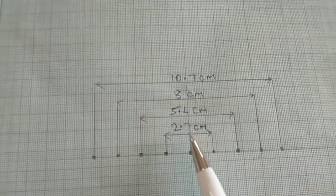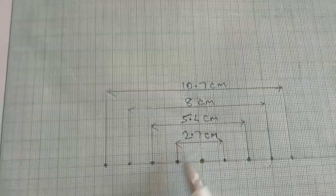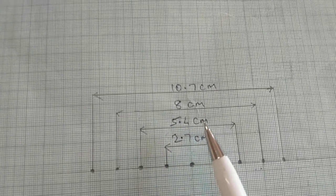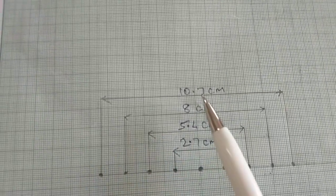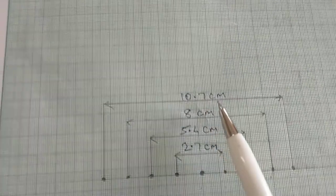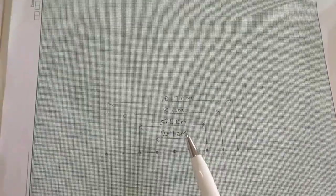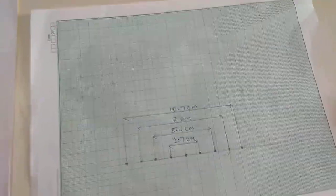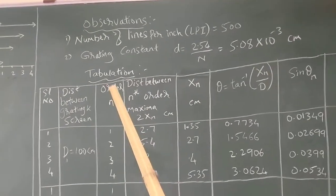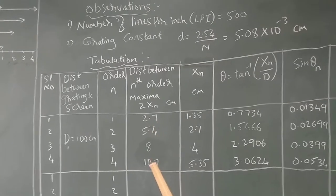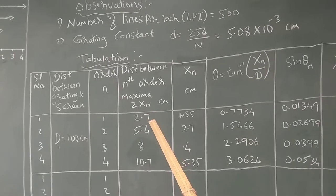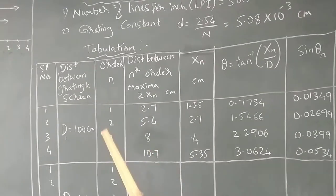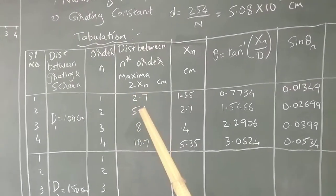The distance between the first orders is 5.4 cm, so in our case it is found to be 2.7 cm. Similarly, the distance between the second order is 5.4 cm, the distance between the third order is 8 cm, and for the fourth order it is 10.7 cm. These values are entered in the tabular column — the distance between the two action orders: first, second, third, and fourth order, and the corresponding values are entered from the graph.